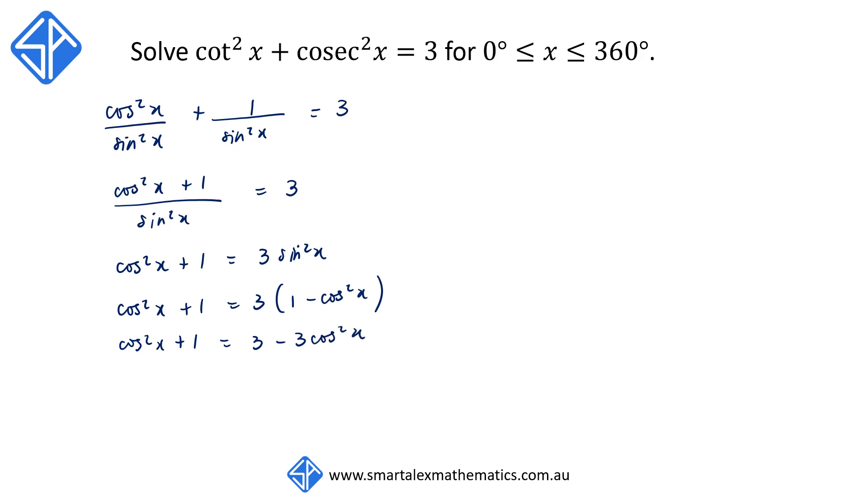I'm going to bring the cos squared x to the left hand side so that we have 4 cos squared x and the 1 goes to the right is equal to 2. Dividing both sides by 4 now we have cos squared x is equal to 2 over 4 which is equal to a half.